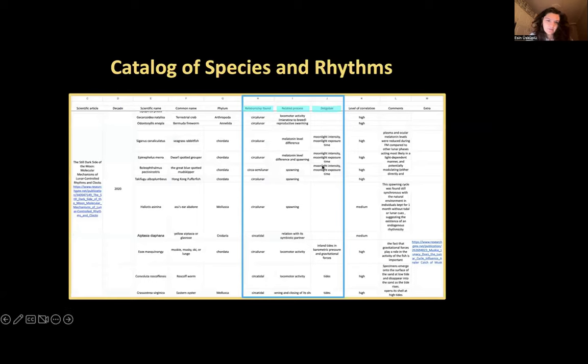This is our Excel file and as I said it consists of 183 organisms, but here only one section of it is shown. The blue rectangle and the ones in it are the important findings. We can see the relationship that these animals have and the related processes with this relationship and the zeitgebers.